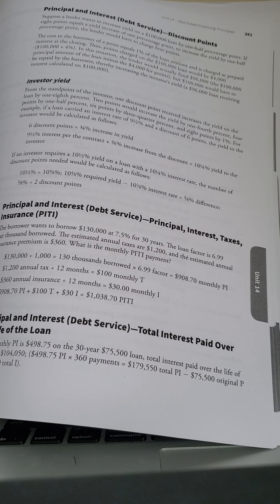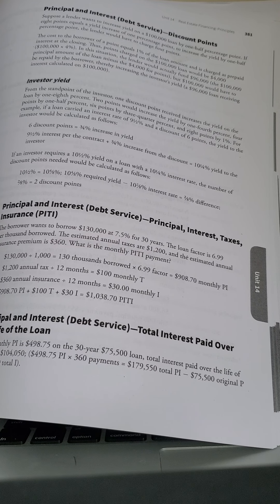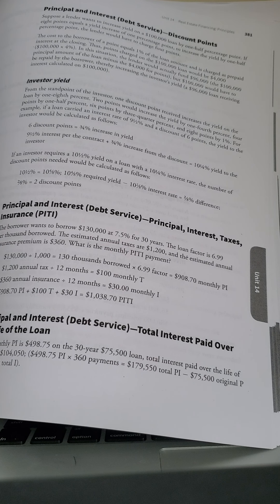Okay, then let's look at the investor yield. When an investor pays one percent, or one discount point, that point is going to reduce his interest rate one-eighth of a percent, and that one-eighth discount point will increase the lender's yield one-eighth of a percent.